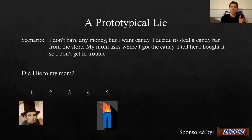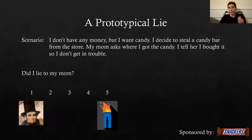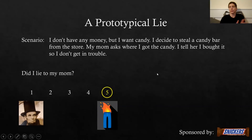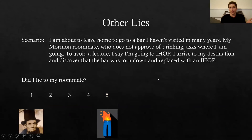Starting with a prototypical lie: I don't have any money but I want candy, so I steal a candy bar from a store. When I get home my mom asks where I got the candy and I tell her I bought it so I don't get in trouble. I asked people to rate this on a scale of one to five, where one is honest and five is 'pants on fire.' I'm seeing lots of fives in the chat — this is a pretty clear-cut case with all the features of a lie.